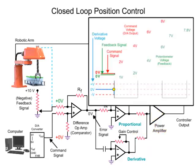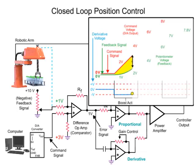The error becomes constant when the voltage from the potentiometer indicates that the robotic arm position is changing at a constant rate of the command signal. At this time, the derivative voltage changes to 0 volts, and the proportional amplifier continues to produce a voltage.